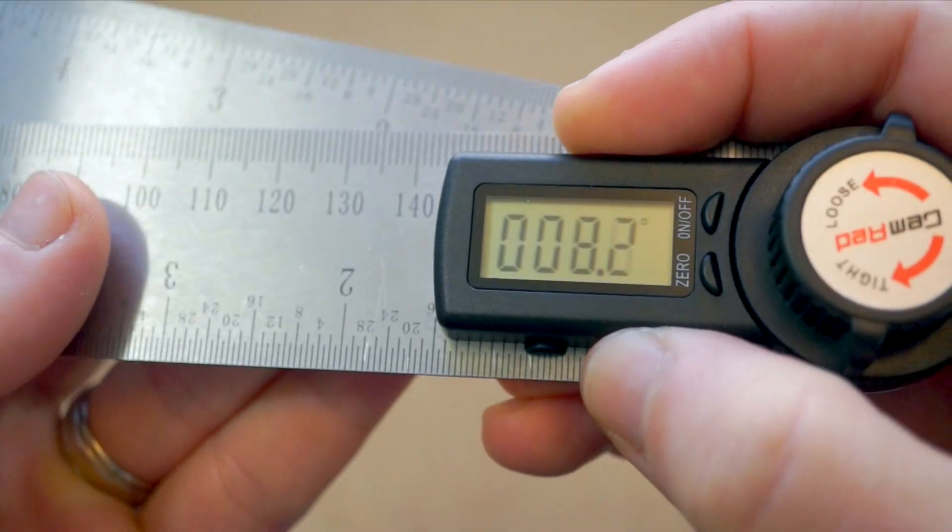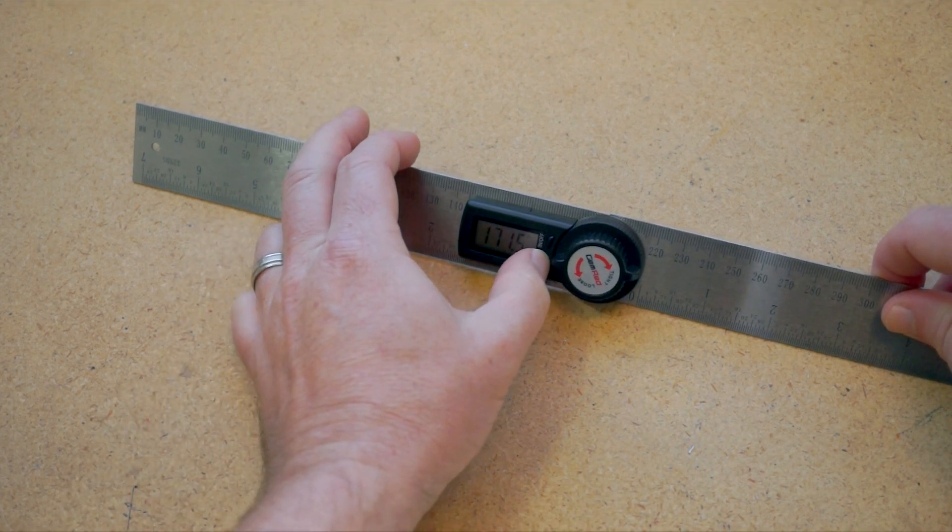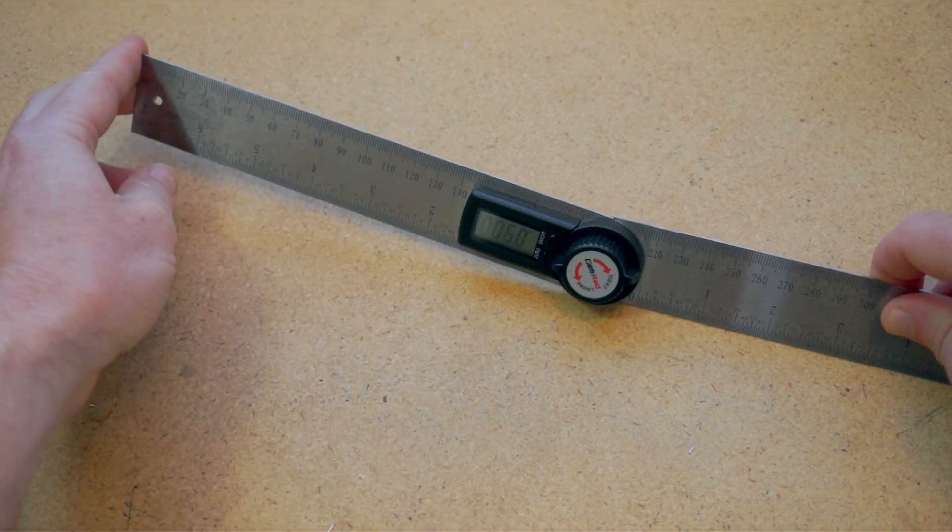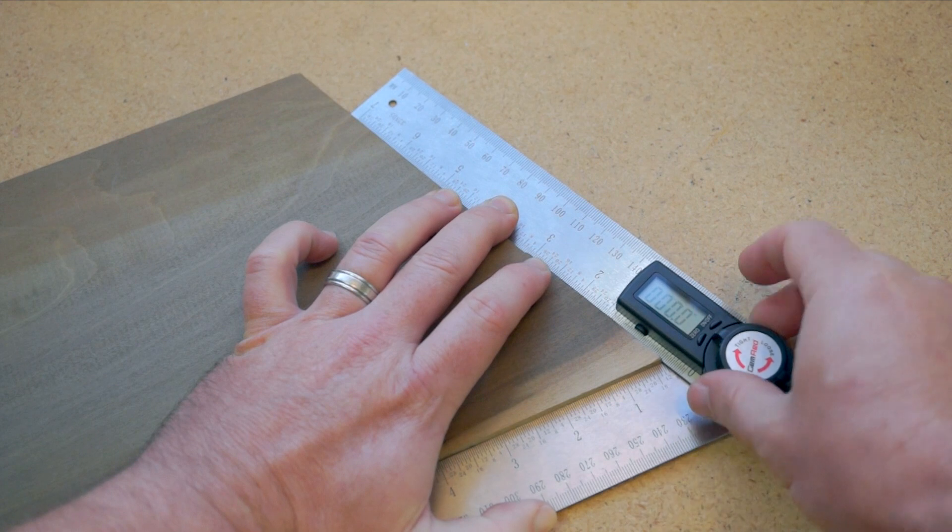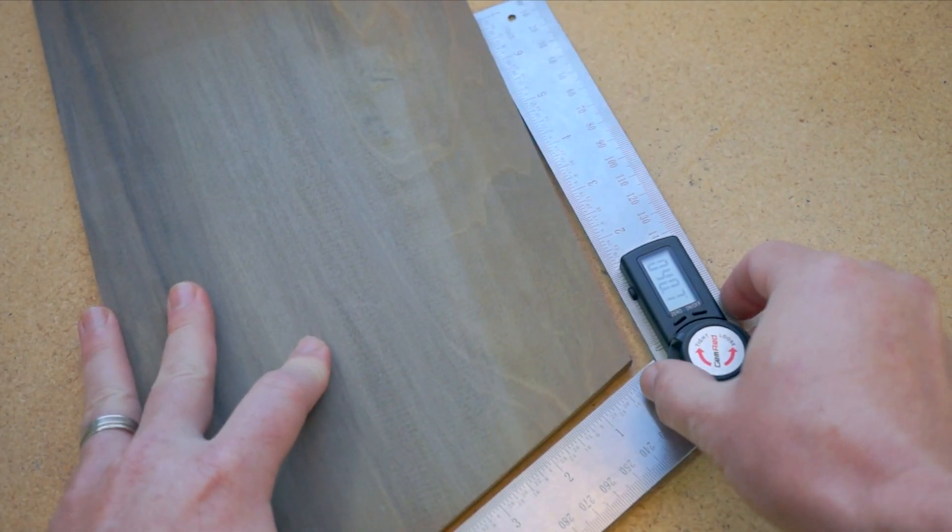It reads in either direction. You can flatten it out and zero it and measure up from here. You can compare angles by measuring one, zeroing it out, and then measuring the other to see the difference.